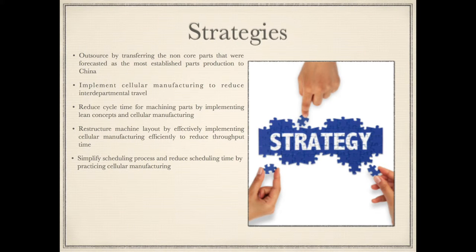Strategies: Outsource by transferring the non-core parts forecasted as the most established parts' production to China. Implement cellular manufacturing to reduce interdepartmental travel, reduce cycle time for machining parts by implementing lean concepts and cellular manufacturing, restructure machine layout by effectively implementing cellular manufacturing to reduce throughput time, and simplify the scheduling process by practicing cellular manufacturing.